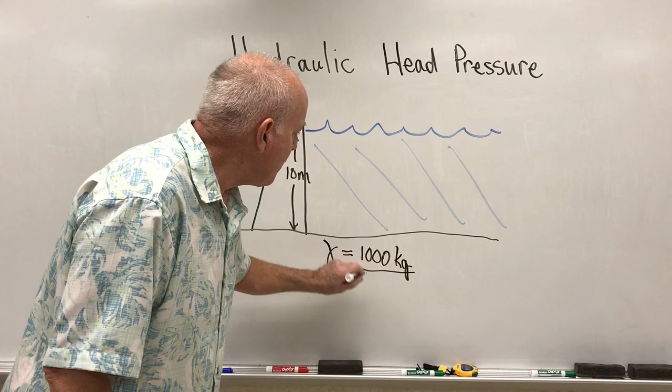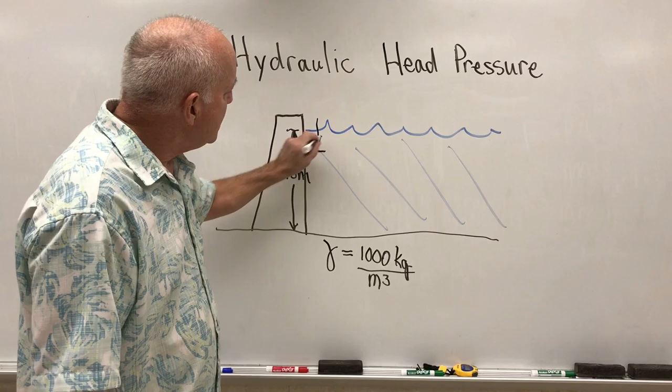So that's the density of water. That means that every time I go down one meter, there's a thousand kilograms of water sitting on top of me.